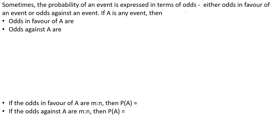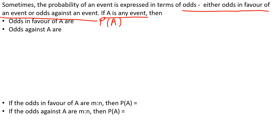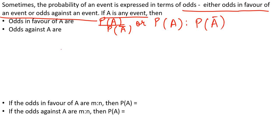Sometimes the probability of an event is expressed in terms of odds — either odds in favor of an event or odds against an event. This is an important concept because questions can come from it. Odds in favor of A means the ratio P(A) : P(A'). Odds against A means the ratio P(A') : P(A).